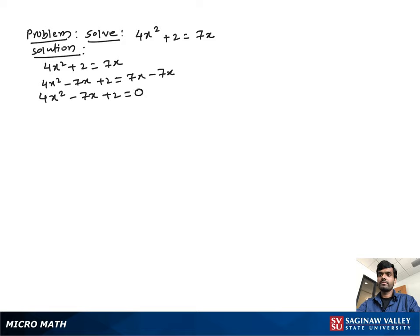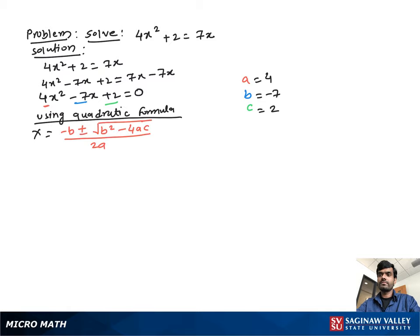Now we determine the value of a, b, c from this standard form of quadratic equation. So a equal to 4, b equal to negative 7, c equal to 2.